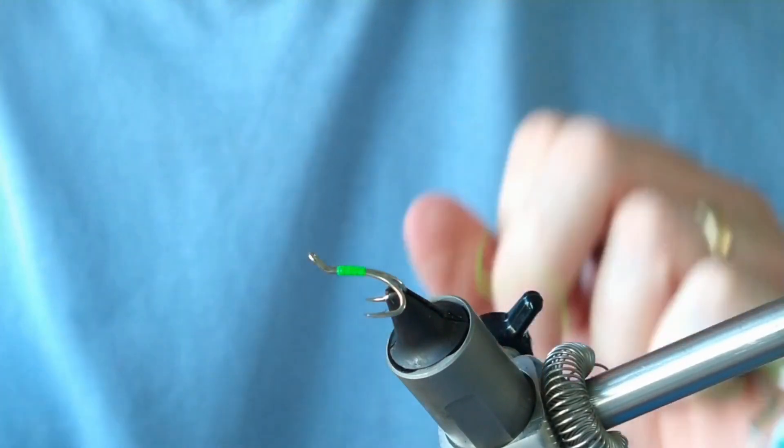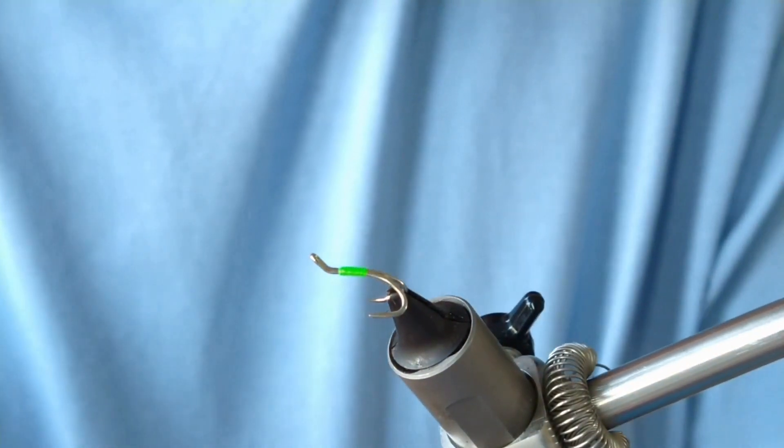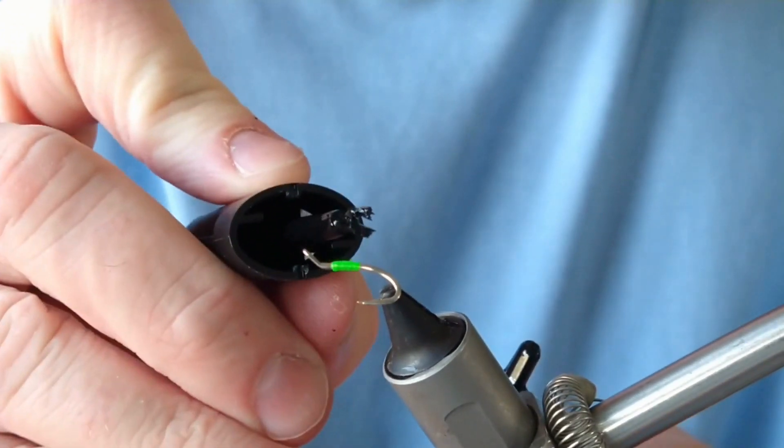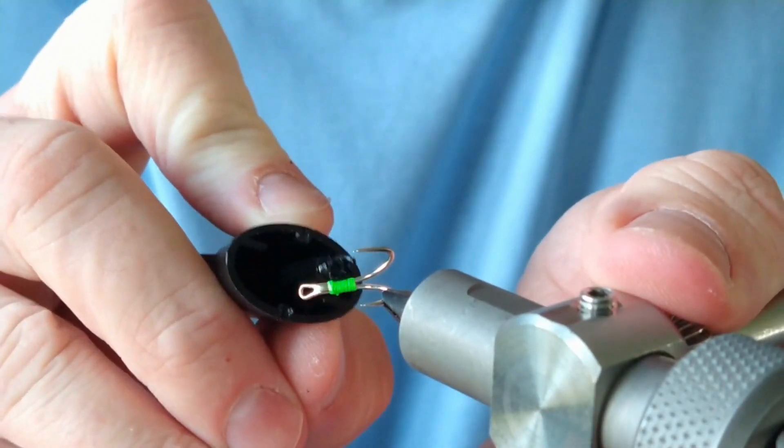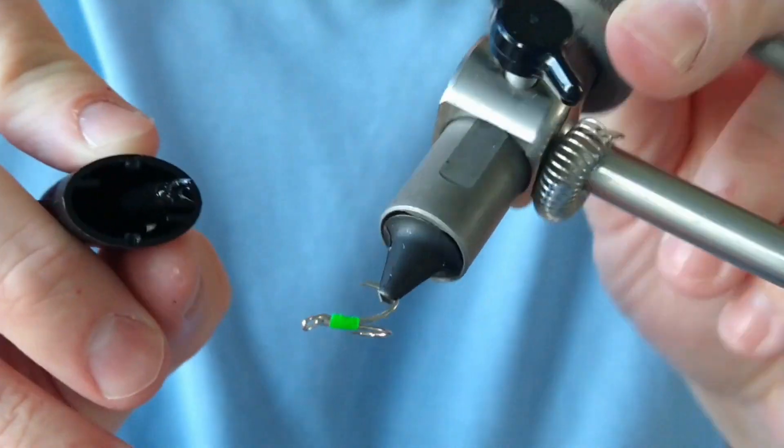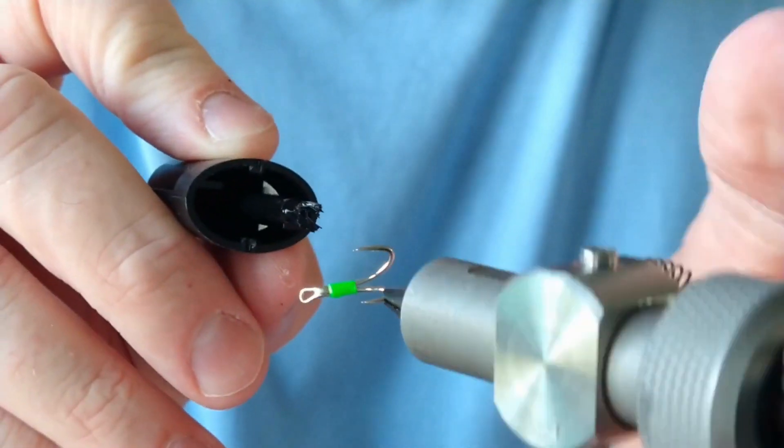Get your super glue varnish and just put a little bit on the body, just to give it that bit of security. I'll probably give it a coat of varnish as well.